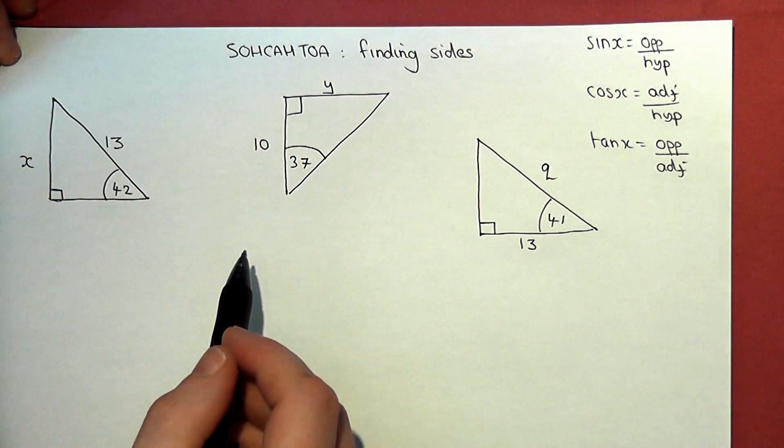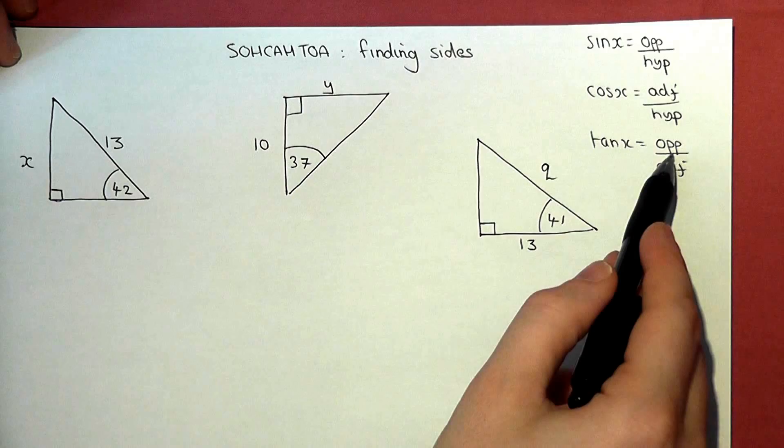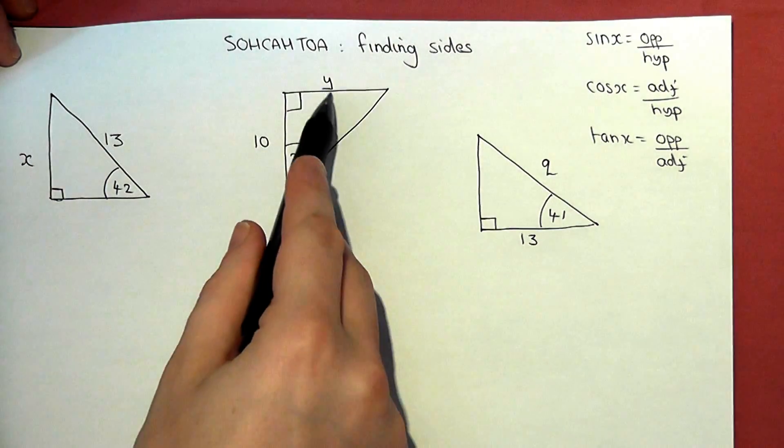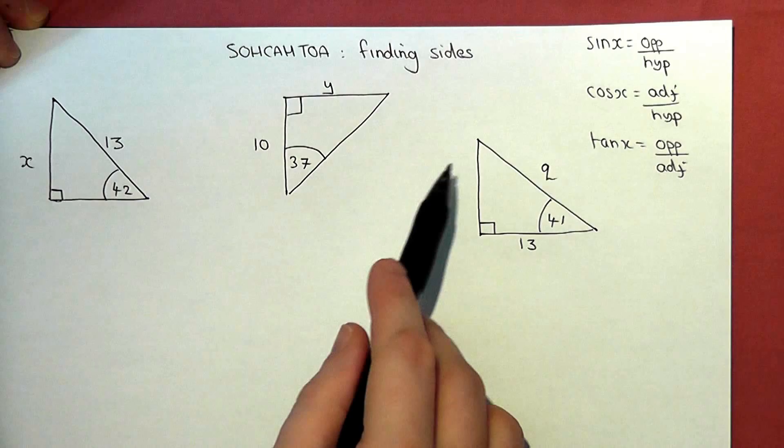This video looks at using the SOHCAHTOA equations to find missing sides when we know one angle and one side.